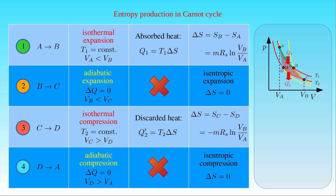We can also study the heat transfer and entropy production in a Carnot cycle by plotting the process variables in a temperature versus entropy diagram. In such a diagram, the isothermal expansion and compression of the working substance are represented by horizontal lines between states A and B, and states C and D at temperatures T1 and T2 respectively. The vertical lines between states B and C, and states D and A at S_A and S_B represent the adiabatic expansion and compression, which are isentropic processes.